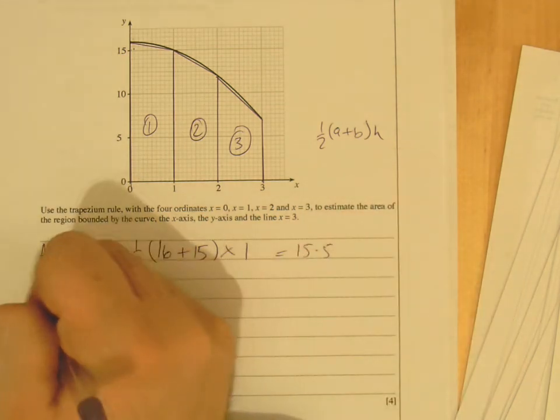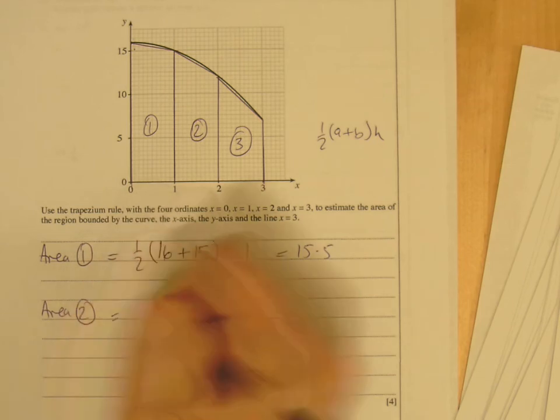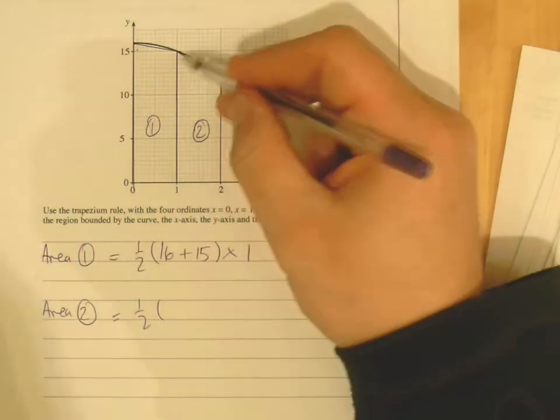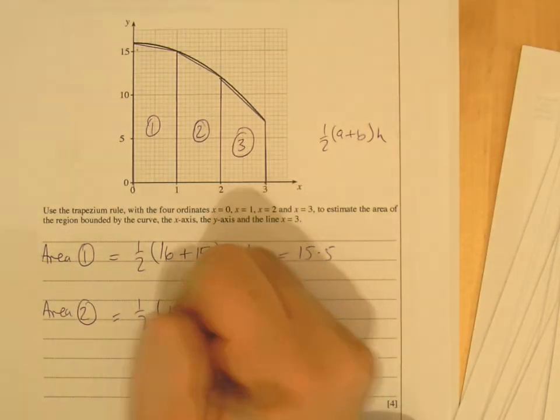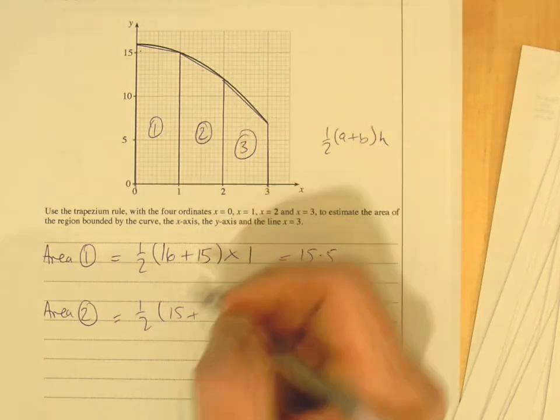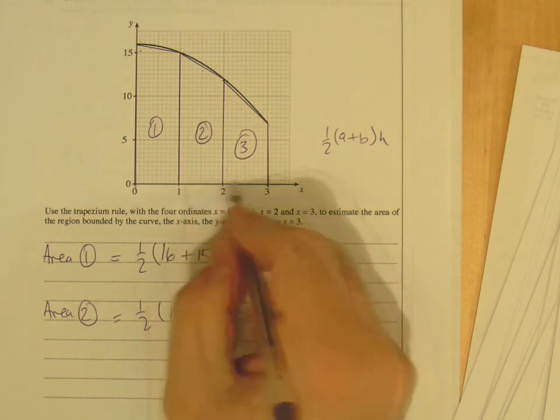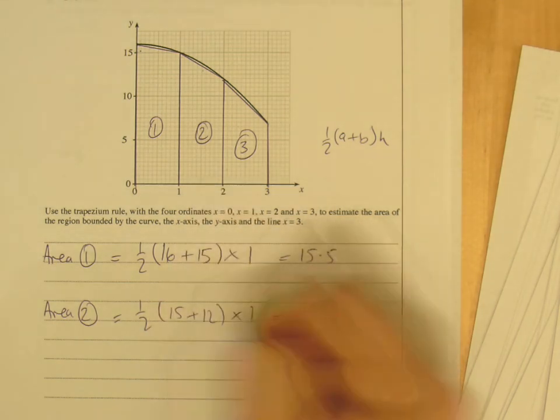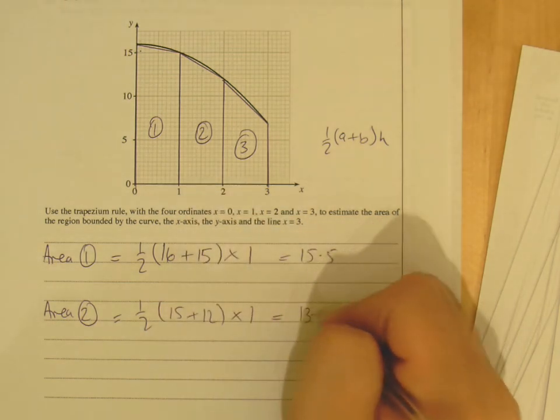Area 2, again, same formula, 15 there is your a, and your b then is that value there, which I think is 12, if I'm right, yeah, times then the height between them, which is also 1. So, if you do that on your calculator, you get 13.5.